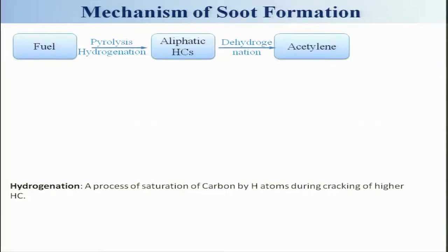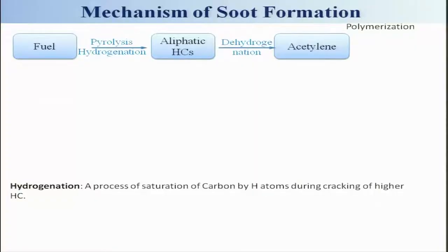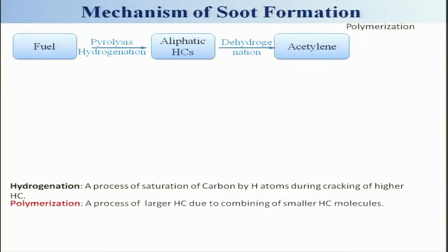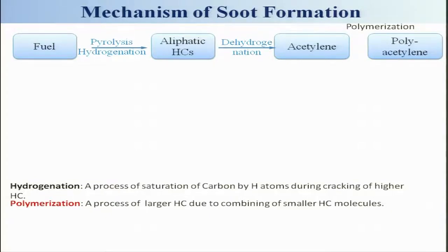Acetylene is generally considered to be the main species for the initiation of soot formation, and acetylene will basically also be polymerized. Polymerization is the process of forming larger hydrocarbons by combining smaller molecules. Due to this polymerization you may get some polyacetylene kind of features.